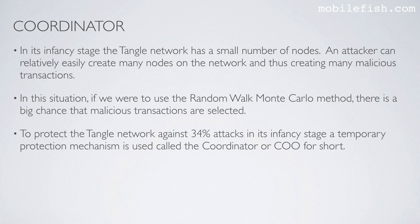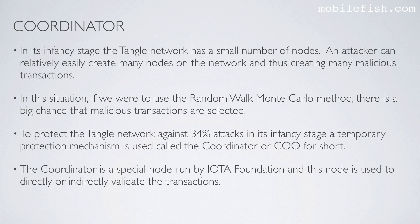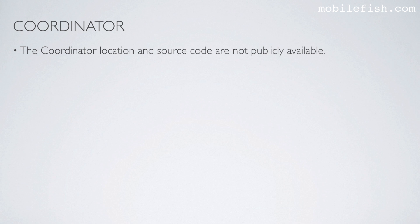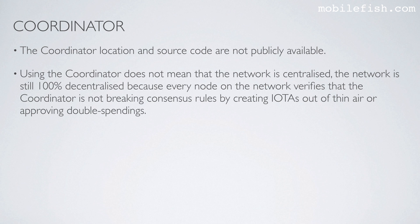To protect the tangle network against 34% attacks in its infancy stage, a temporary protection mechanism is used called the coordinator, or COO for short. The coordinator is a special node run by the IOTA foundation, used to directly or indirectly validate transactions. The coordinator location and source code are not publicly available. Using the coordinator does not mean the network is centralized — the network is still 100% decentralized, because every node verifies that the coordinator is not breaking consensus rules by creating IOTAs out of thin air or approving double spendings.